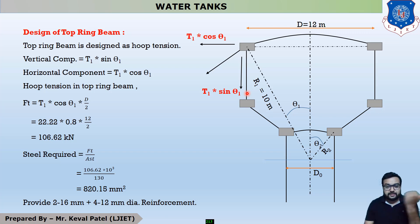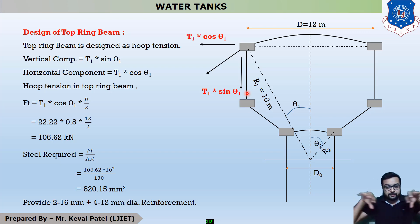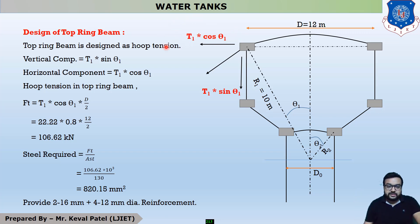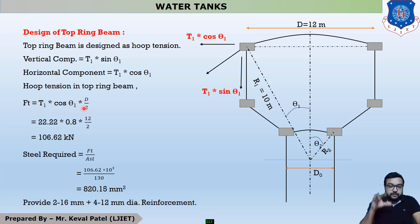From both directions, t1·cos(theta1) acts in tension — away from the center. We have to find t1·cos(theta1) and design the top ring beam using this component. So the hoop tension in the top ring beam, the tensile force ft, is equal to t1·cos(theta1) × (d/2).